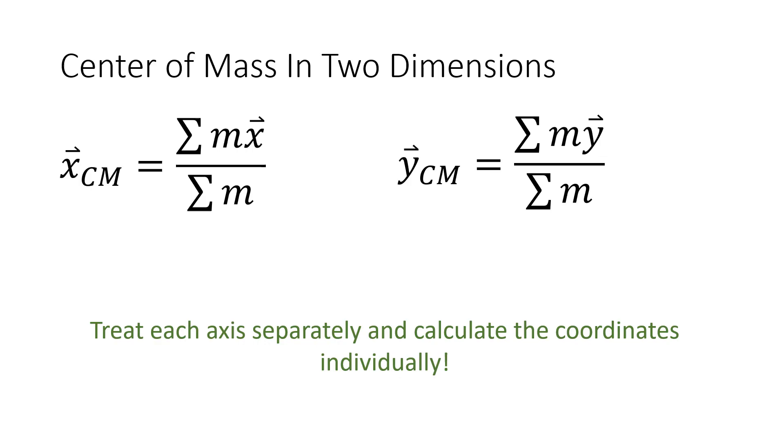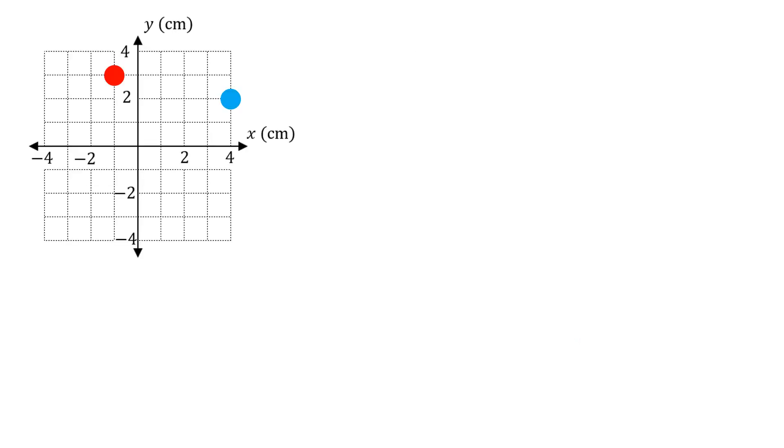Let's talk about what happens when you have a two-dimensional object. X in the equation x_CM refers to an x position. You could just as easily replace the x's with y's and find a y or vertical position. Like a lot of things in physics, we have two directions. We just treat each direction separately and calculate the results independently. In this case, we're going to do two calculations: one for the horizontal center mass and one for the vertical center mass.